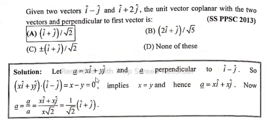let's suppose vector a is equal to xi plus yj and a is perpendicular to i minus j. So two vectors perpendicular means their dot product equals zero. xi plus yj dot i minus j equals x minus y equals zero, which implies x equals y.